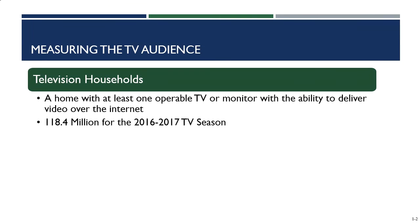The first number we need to understand is television households — the number of homes in the United States with at least one operable TV or monitor that has the ability to deliver video over the Internet. It doesn't have to be a physical TV; it could be a computer or an iPad. Anything that can stream video counts as a television household. For the 2016–2017 TV season, Nielsen estimated 118.4 million television households in the United States. That's an important number to remember — we'll use it quite a bit as we work through the rest of our measurements.